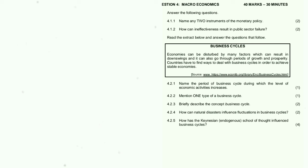4.2.3: Briefly describe the concept 'business cycle' — successive periods of increasing and decreasing economic activities. You have to memorize these answers. 4.2.4: How can a natural disaster influence fluctuations in the business cycle? Bad weather can reduce the productivity of the agricultural sector, causing a downturn and contractions in the business cycle due to a decline in supply of agricultural products.